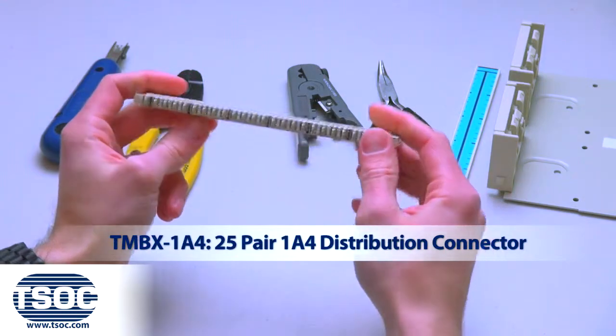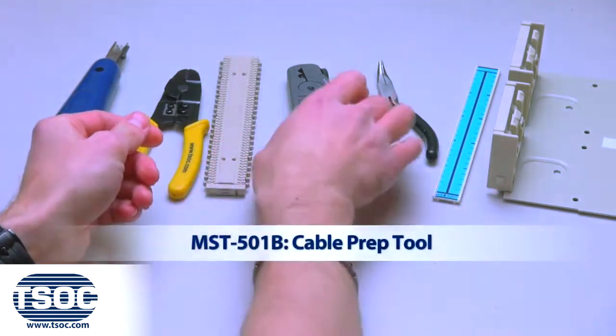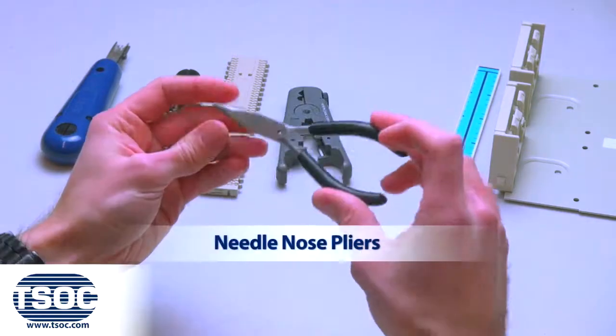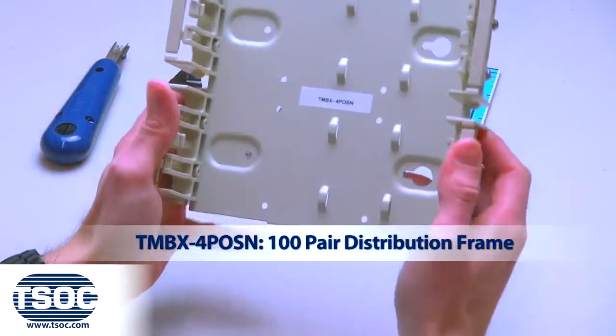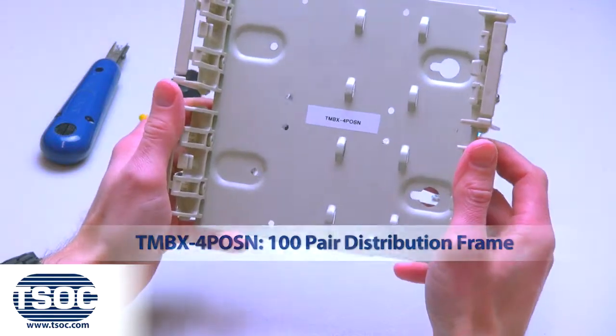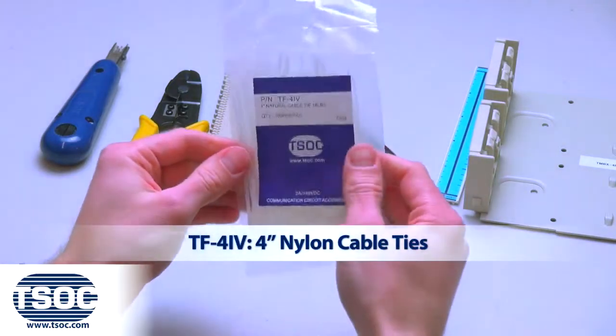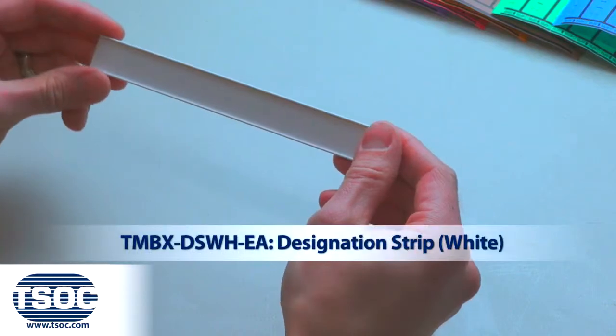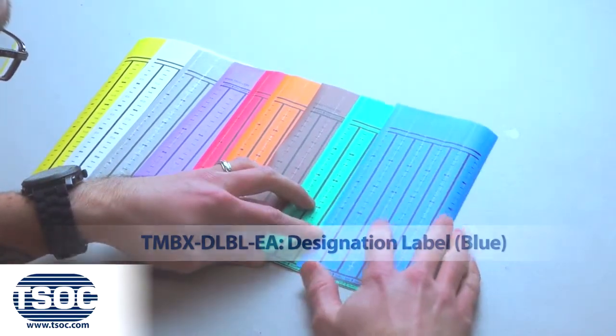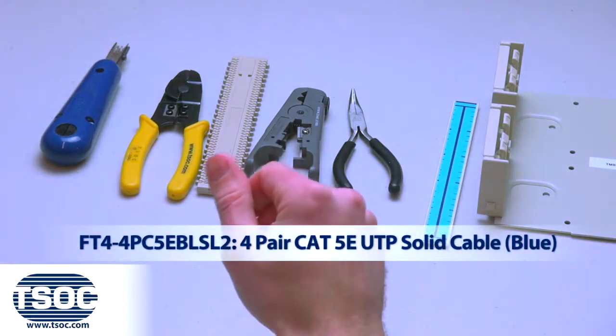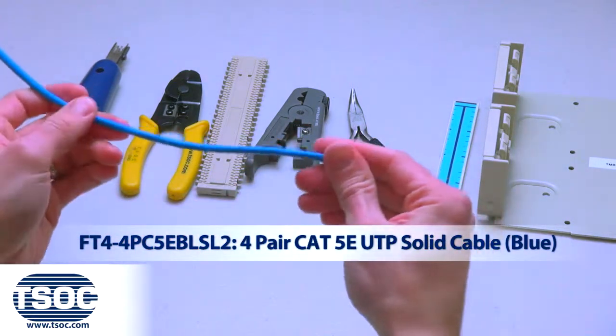4-Pair Markings, Cable Prep Tool, Needlenose Pliers, 100-Pair Distribution Frame, 4-Inch Nylon Cable Ties, Designation Strip White, Designation Label Blue, 4-Pair CAT 5E UTP Solid Cable Blue.